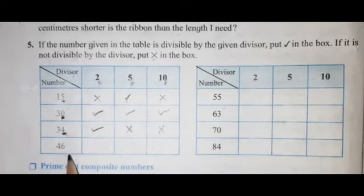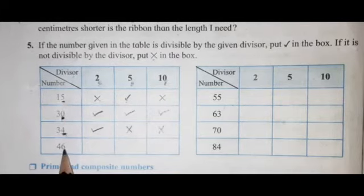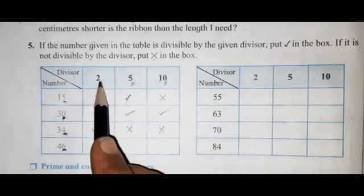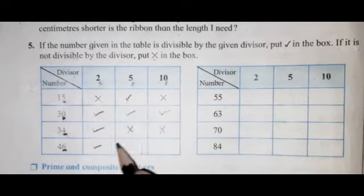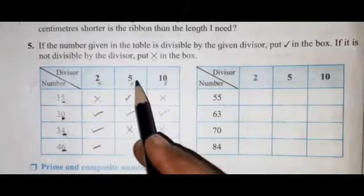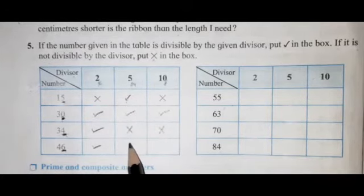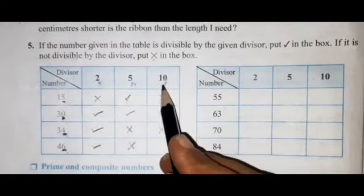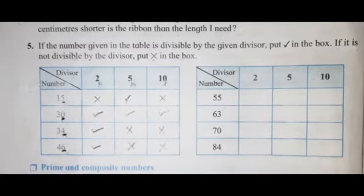Next number is 46. At unit place there is 6, so the number is divisible by 2 — put a correct mark. Is 46 divisible by 5? No — put cross. Is 46 divisible by 10? No — put cross for wrong answer.